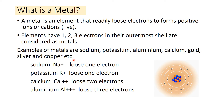Gold and silver are very familiar — jewelry is made of gold and silver. Copper wires and copper utensils are common. Calcium is important as our bones are made up of calcium, and we need it as a mineral. Aluminium foil is something you are familiar with. Sodium is present in common salt (NaCl), and potassium is also present in rock salt. These are all metals we use in our daily life.